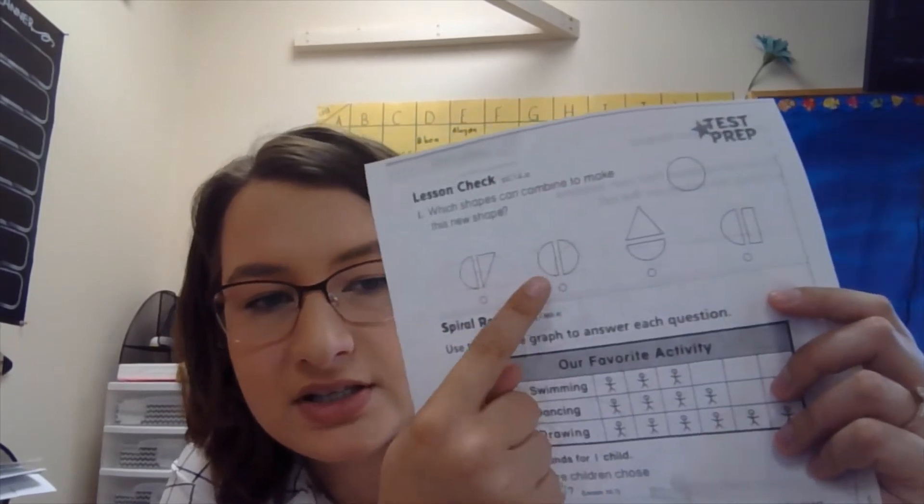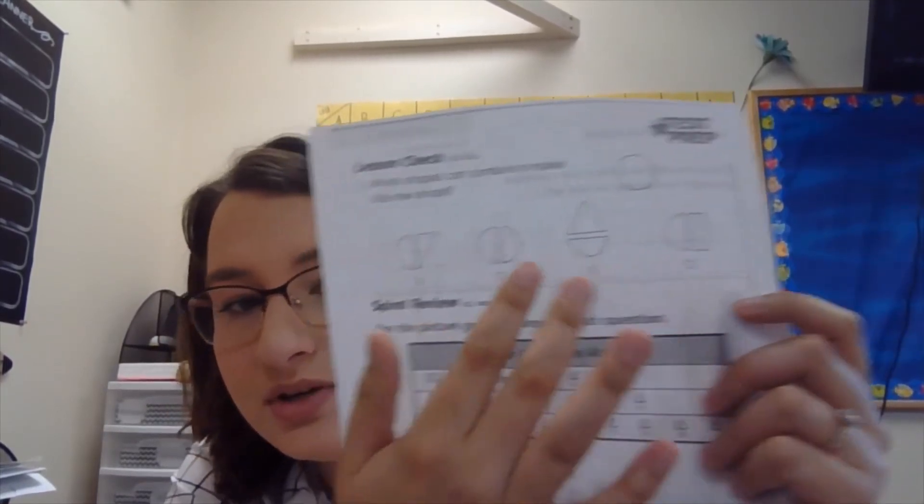Now let's go to the back. On the back, it says which shapes can combine to make this new shape? And they show you a circle. So which two of these shapes could combine? Not like this one and this one, but you see how each of them have two shapes? This one's two, this is two, this is two, this is two. Which one of these could make this circle? Go ahead and mark that bubble.